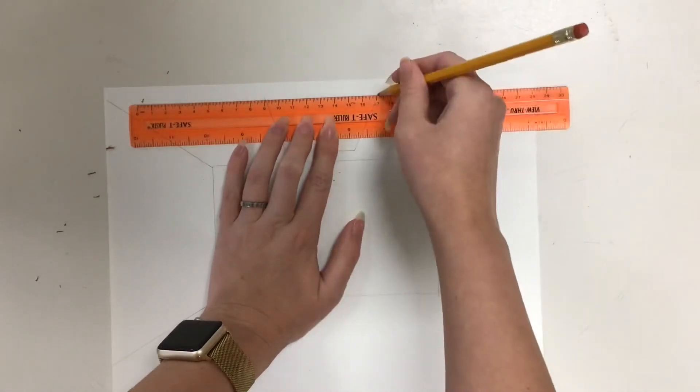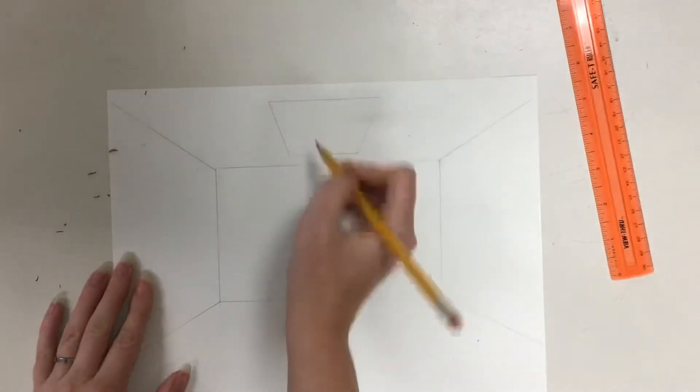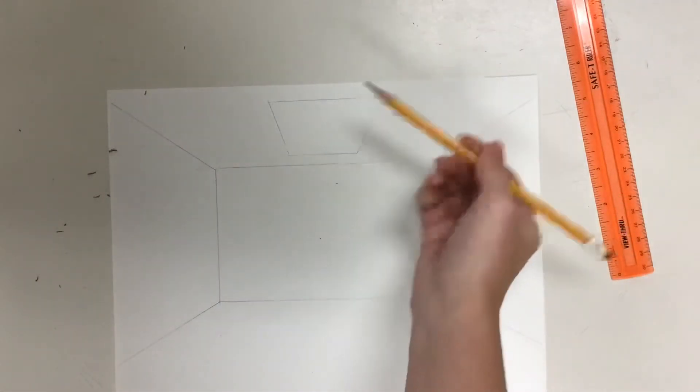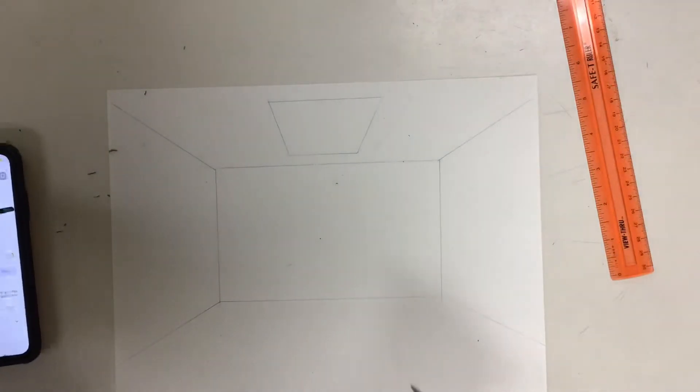But if you were looking straight up at it, it would be a perfect rectangle. So this is going to be where I fit the ceiling fan in. That way, I can make sure that it's getting smaller at the back and bigger at the front. So I'm going to look at my picture here.